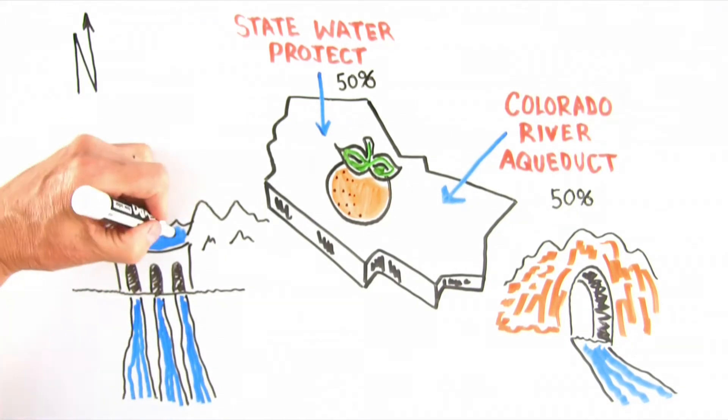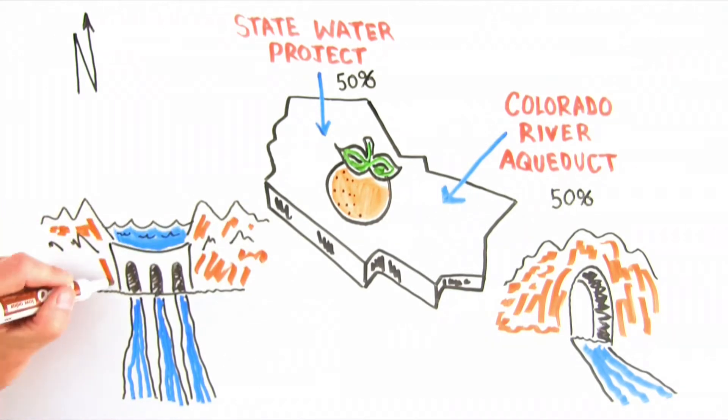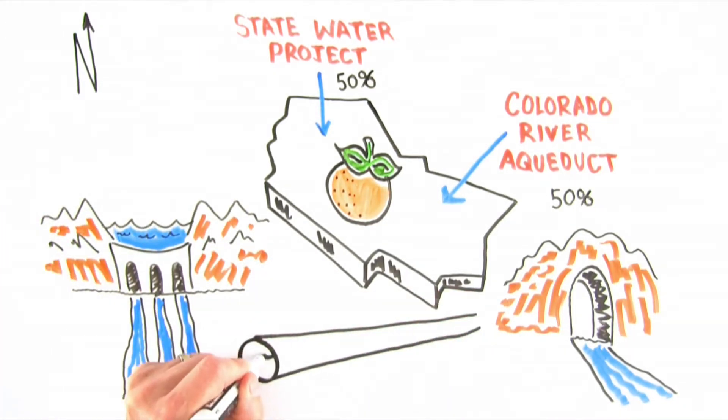Construction included erecting four dams and five pumping plants, blasting 90-plus miles of tunnels, and constructing 150 miles of canals, siphons, conduit, and pipelines.